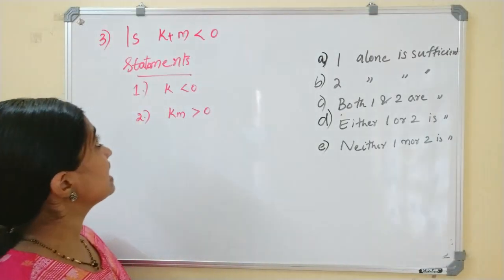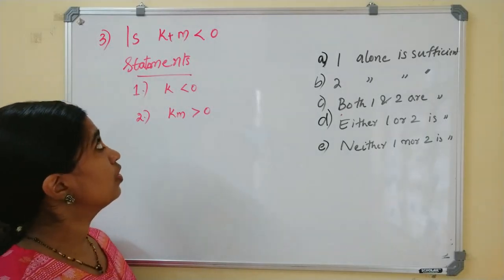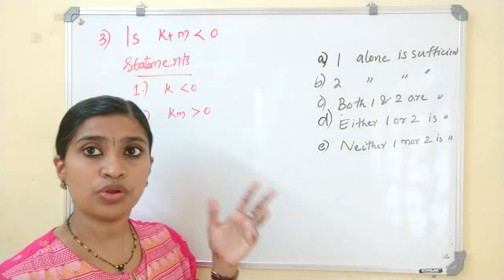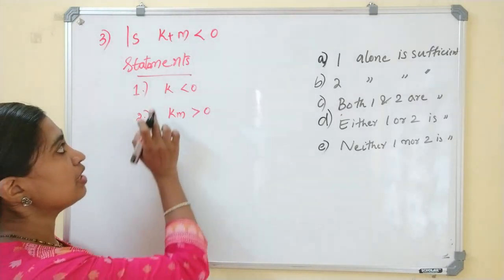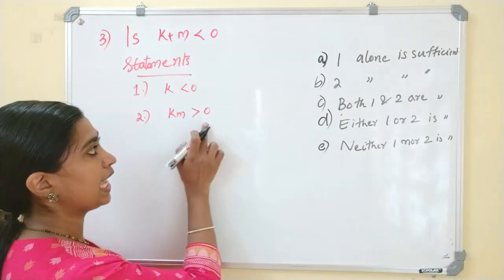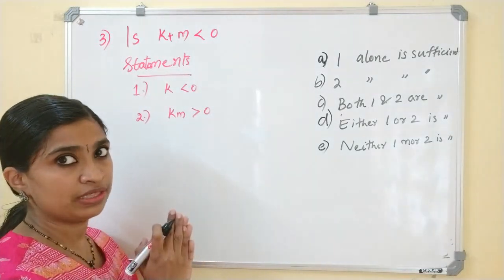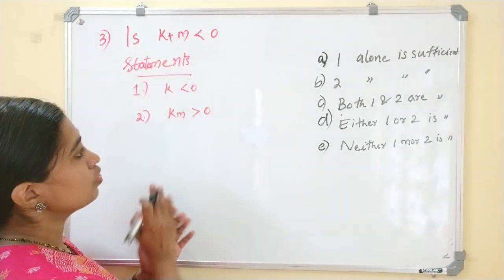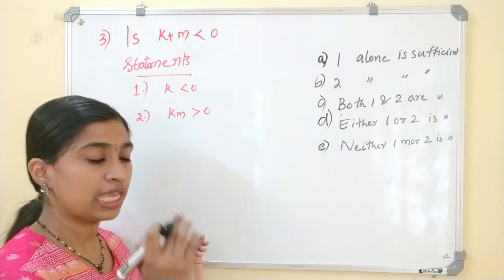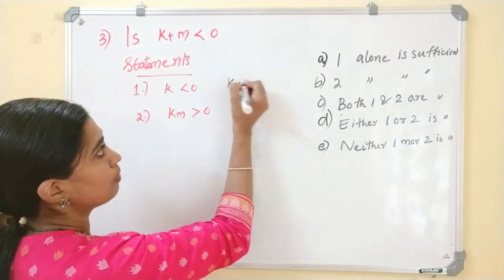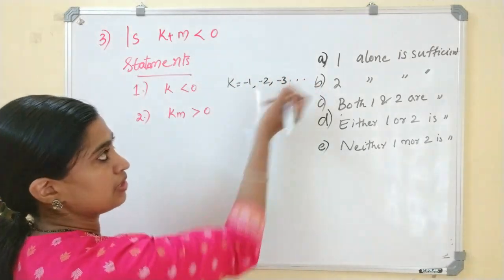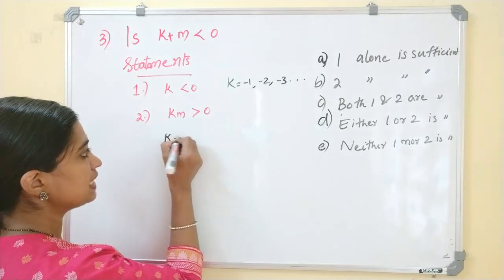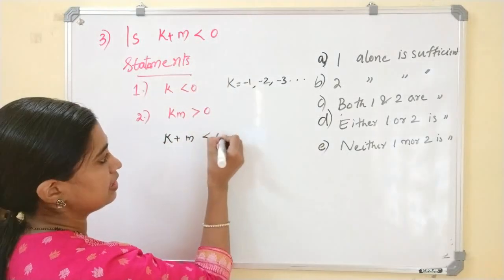This is the next question. Is K plus N less than 0? This is a yes or no question. Here we are asked to find whether K plus N is less than 0 or not. The given statements are: statement one — K less than 0; and statement two — KM greater than 0. We read the question and look at the first statement. K less than 0 means K takes negative values: K equals minus 1, minus 2, minus 3, etc. But we are not given the value of M.